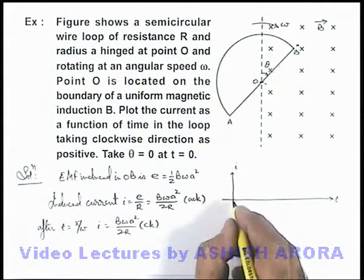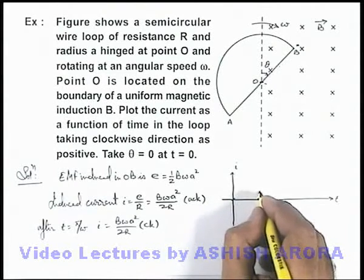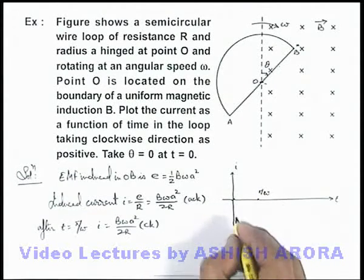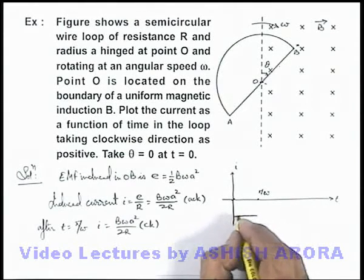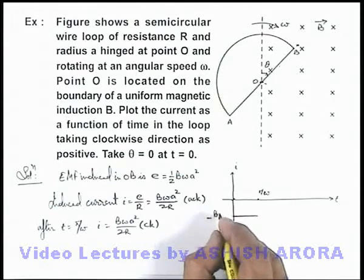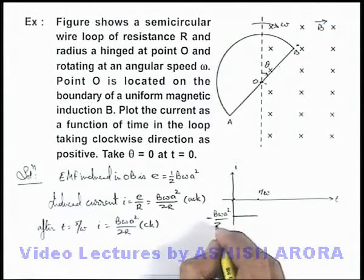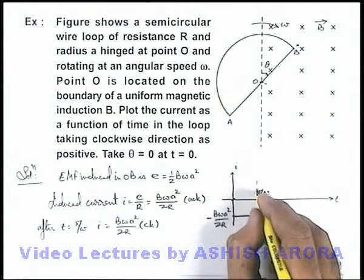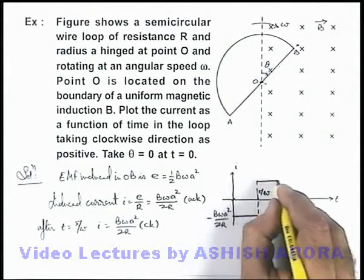From initial time zero to pi by omega, the current will remain negative constant with value minus B omega a squared by 2R. At t equals pi by omega, it changes to positive.